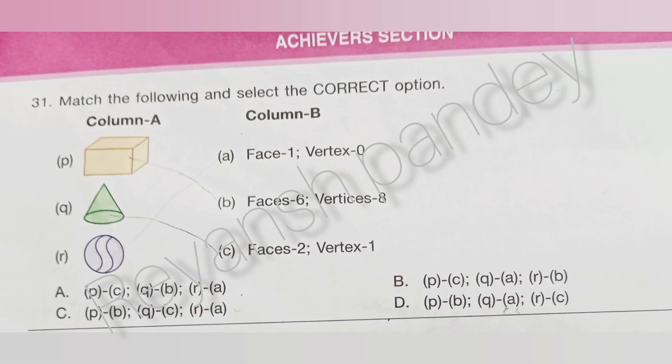A cuboid has 6 faces and 8 vertices. A cone has 2 faces and 1 vertex. A sphere has 1 face and 0 vertices. So the answer is C.